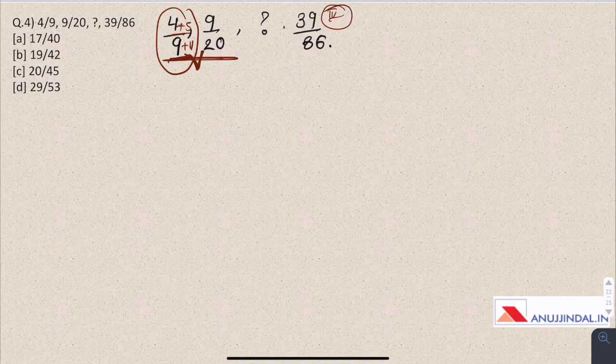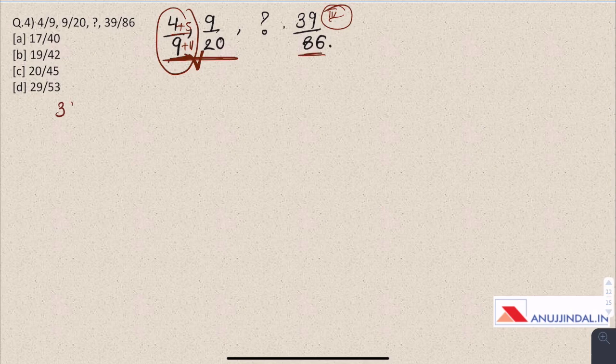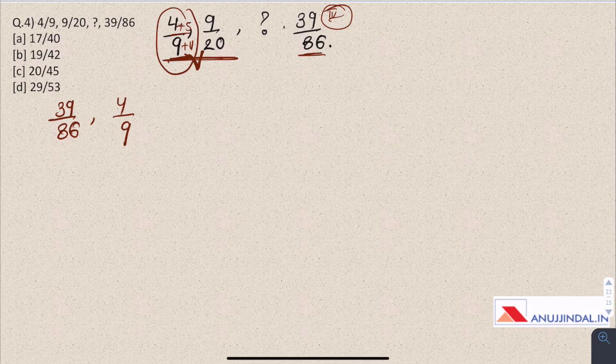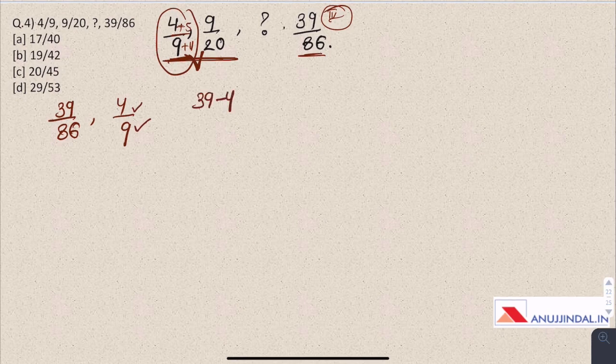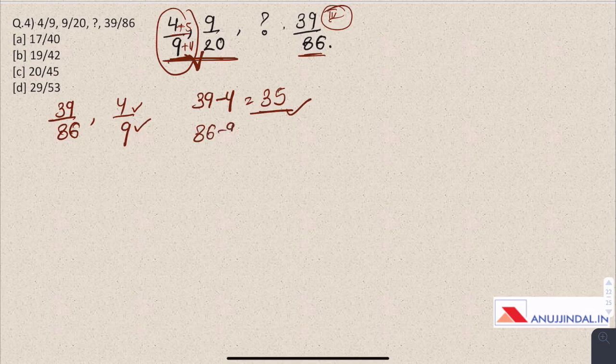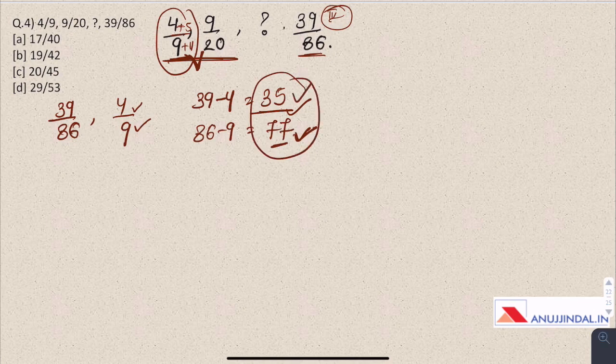So find the difference between the fourth number and first number. So we see fourth number is 39 by 86 and first number is 4 by 9. Do not try and solve fractions mathematically. We are just seeing the denominator and numerator individually. So 39 minus 4 is 35 and 86 minus 9 is 77. So from first to fourth these are the differences of numerator and denominator each.